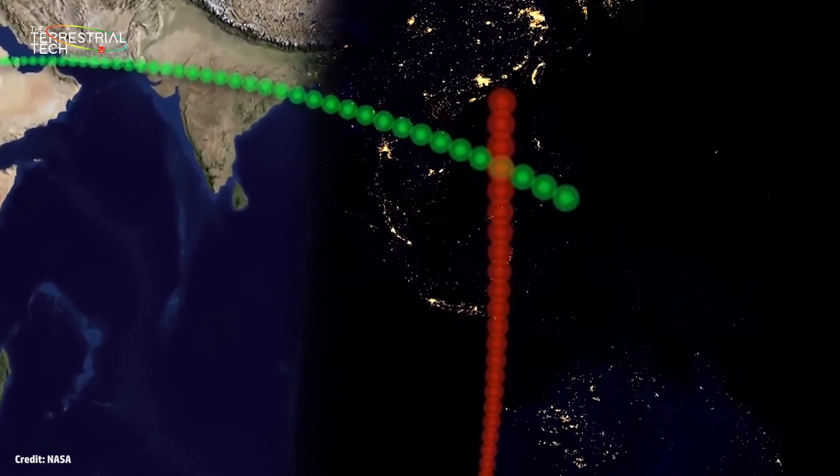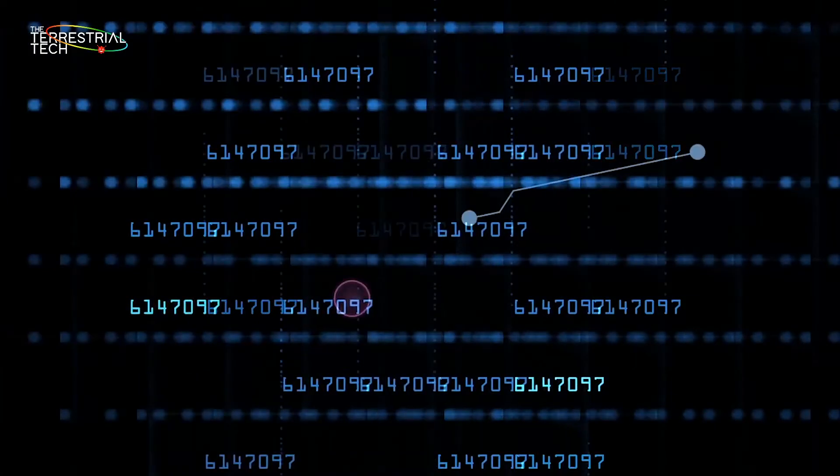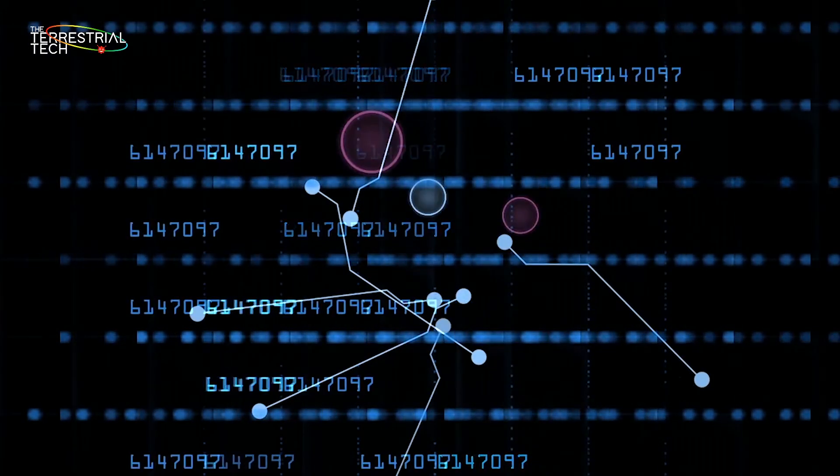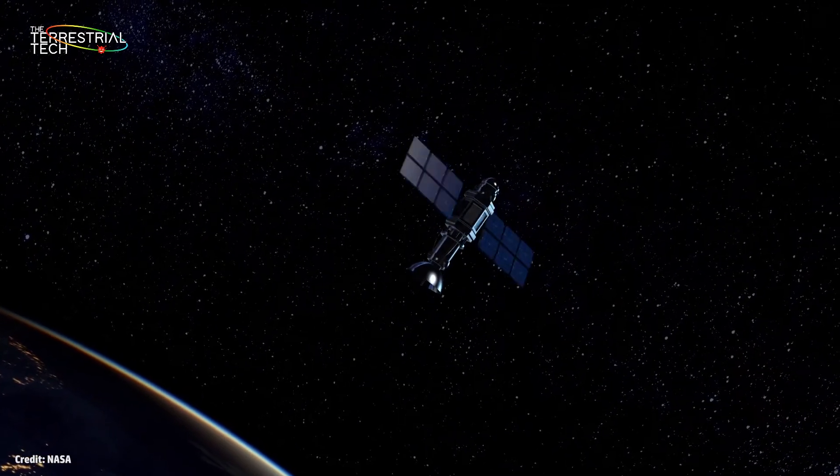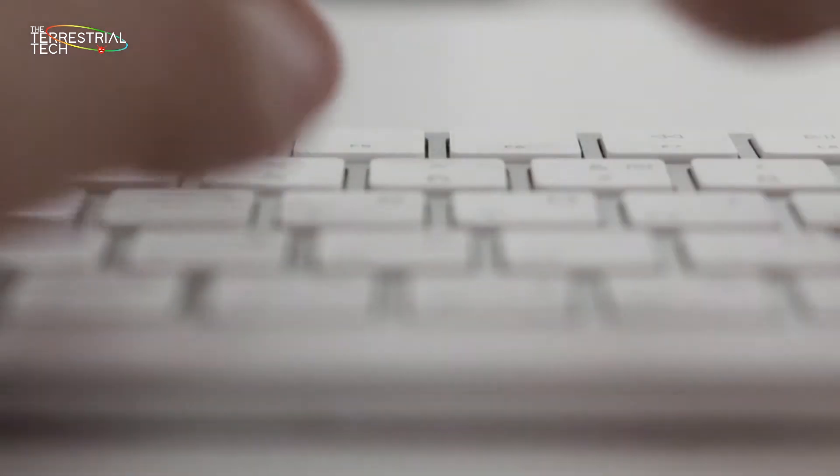Whenever space agencies have to launch something in space, they have to carefully consider the orbital trajectories. All space surveillance agencies monitor the orbital debris from the ground. And if there is a danger of hitting a satellite with some space junk, then they have to alert other agencies.